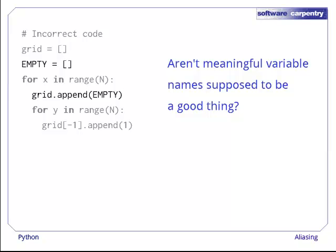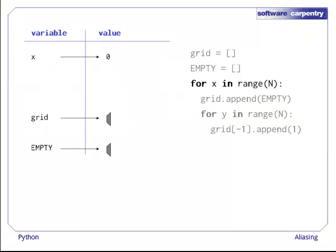To see what's going on, let's watch this code execute. At the start of the outer loop, grid and empty both refer to empty lists. The first thing the loop does is append the list pointed to by empty to the outer list. When the inner loop runs for the first time, it appends a 1 to that inner list.